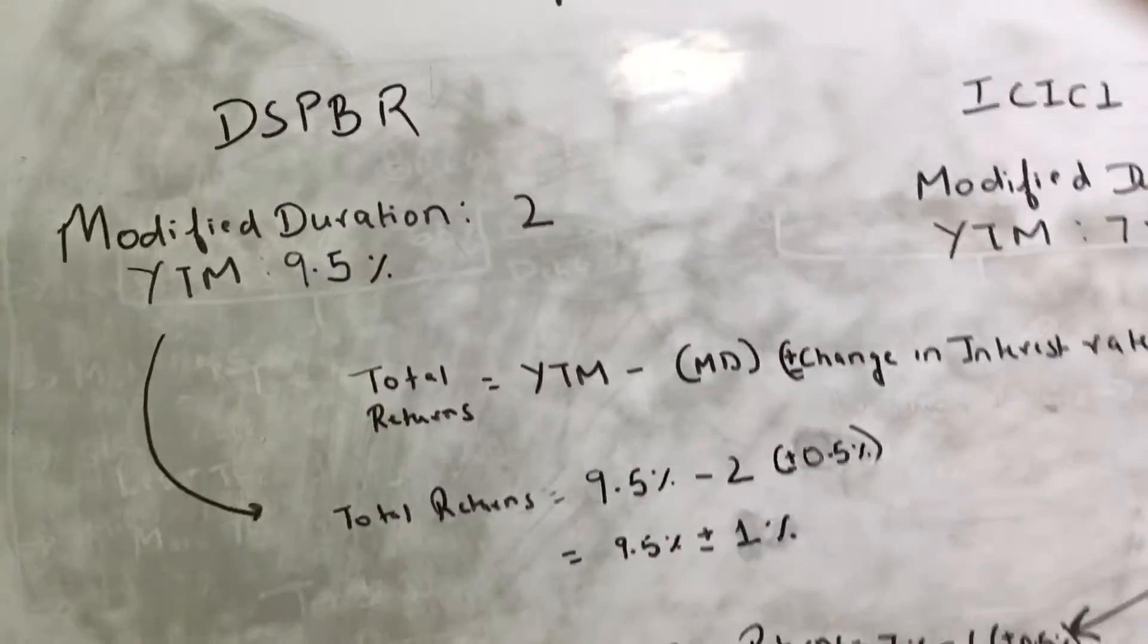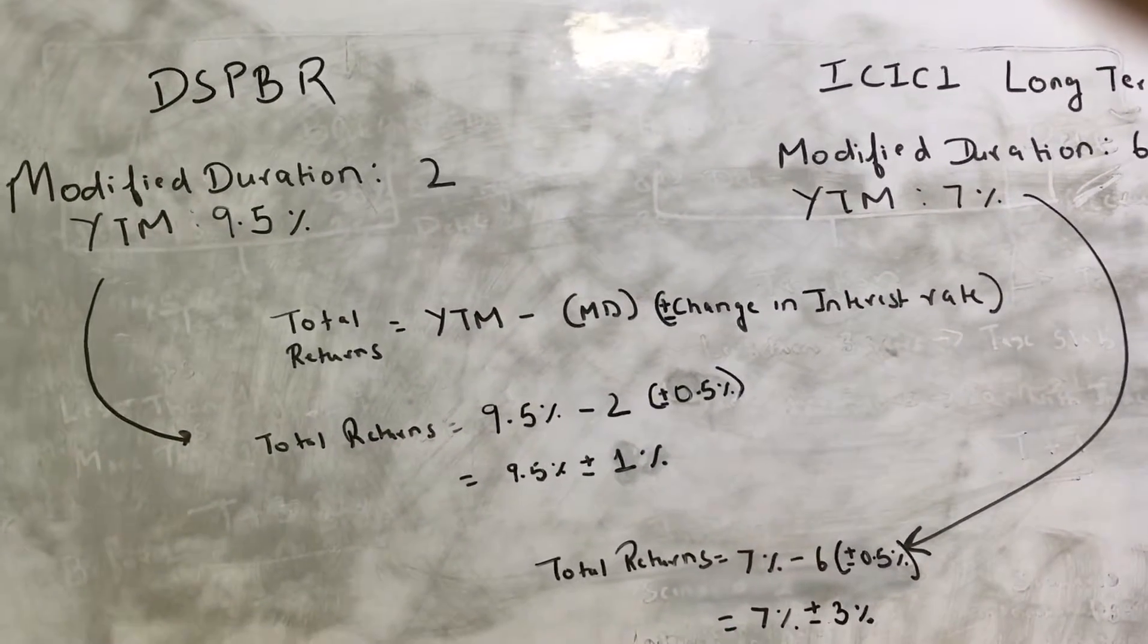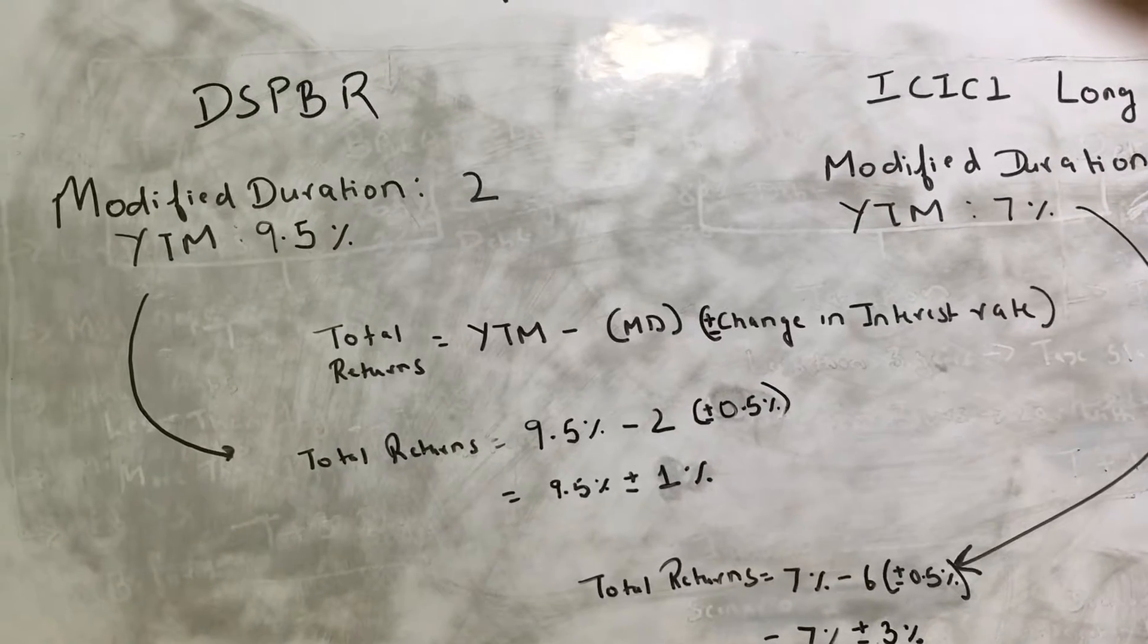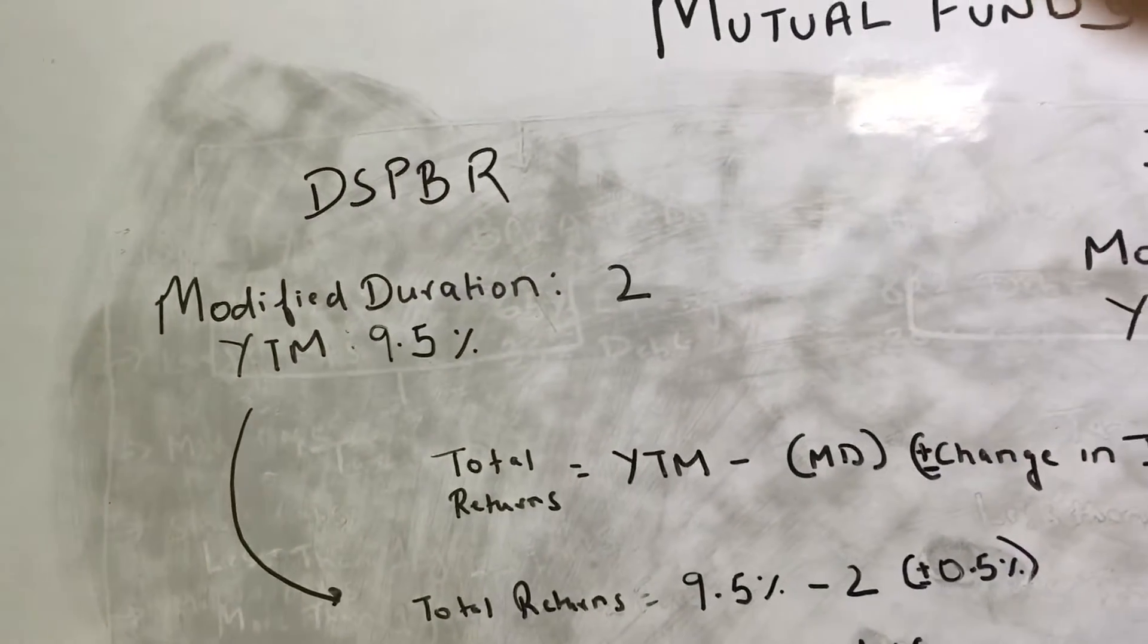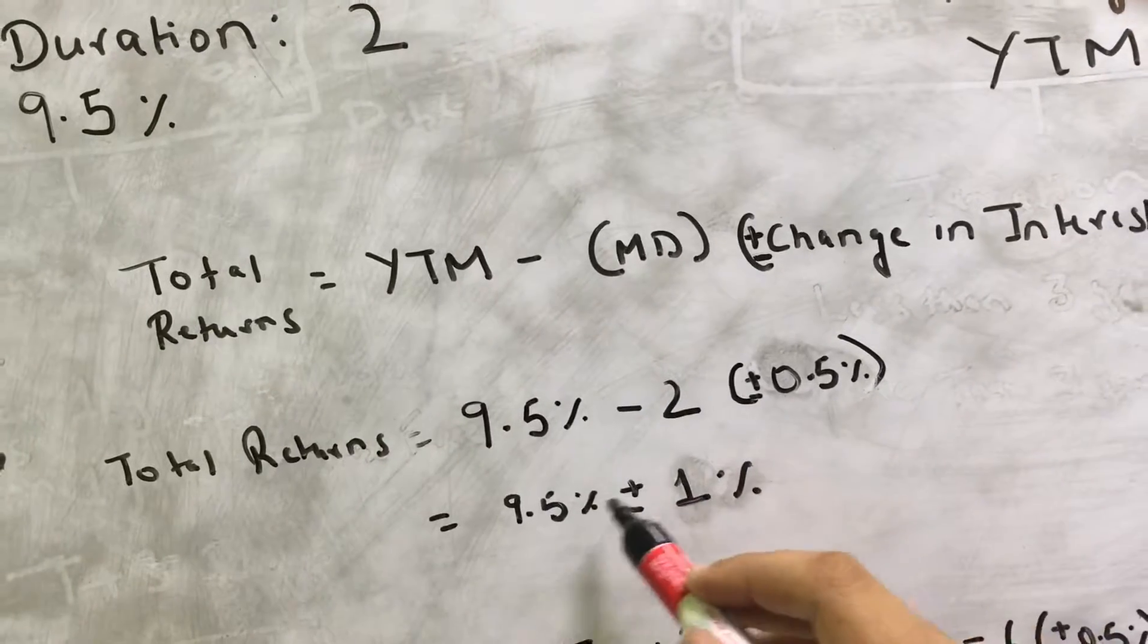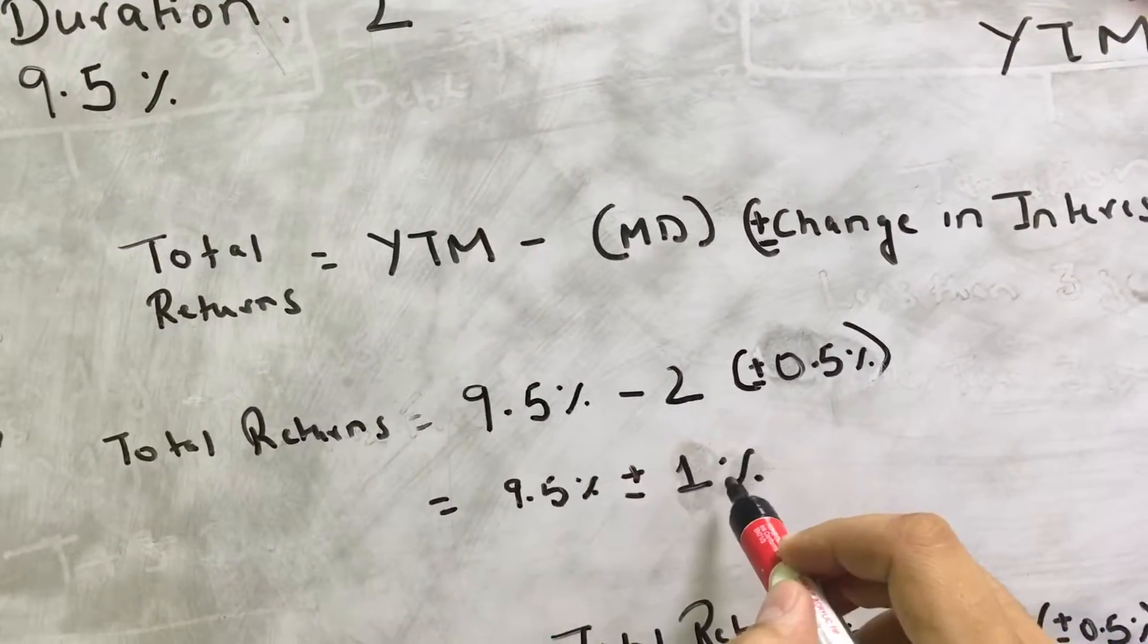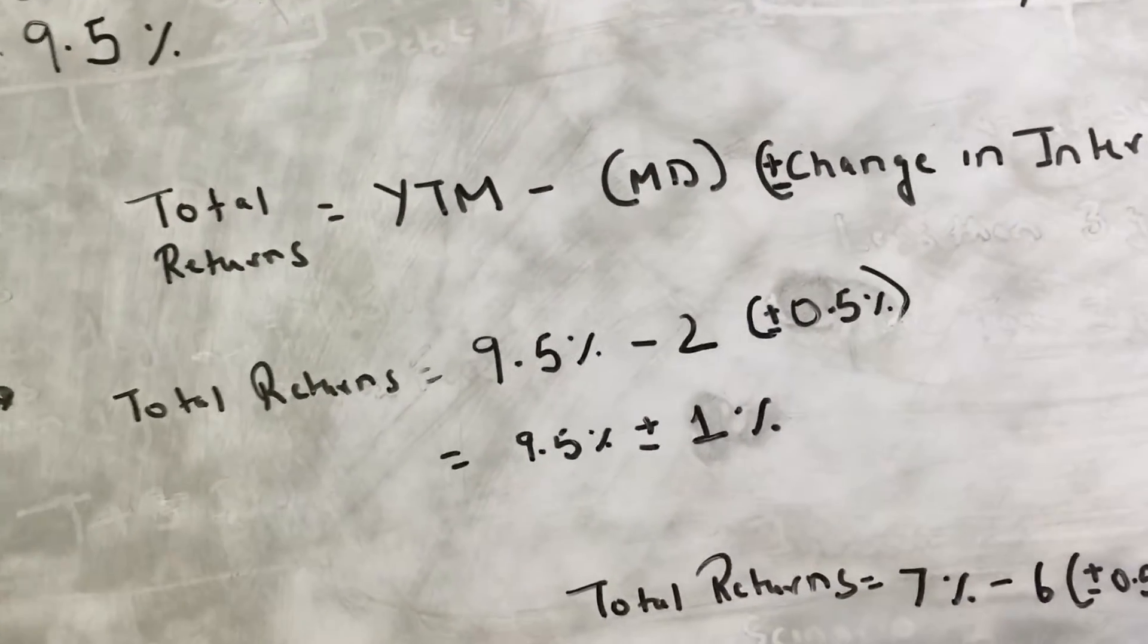Now just to explain the sensitivity that modified duration tells you about the total returns, let's take DSP BlackRock for example. The YTM is 9.5%, let's say the RBI cuts the repo rate by 0.5%. If the RBI cuts it by 0.5% this factor will become minus, so minus minus becomes plus. So my returns will be 9.5% plus minus 1% depending on whether rates have gone up or down.